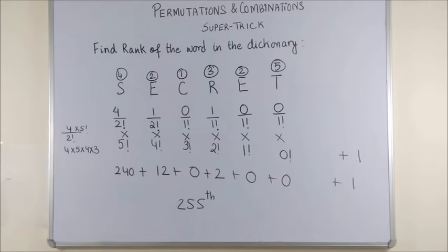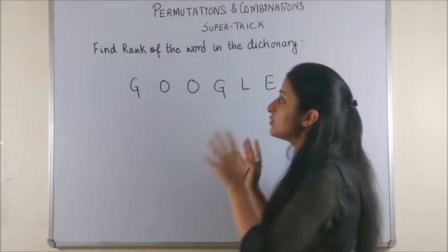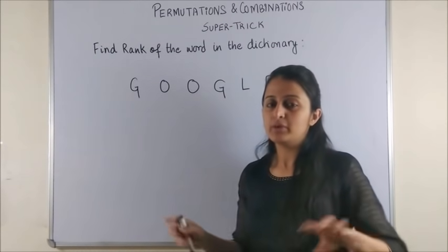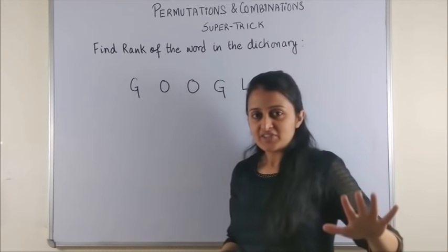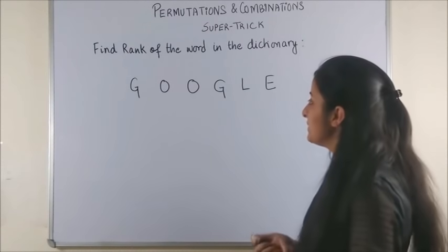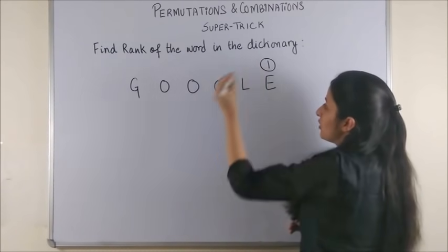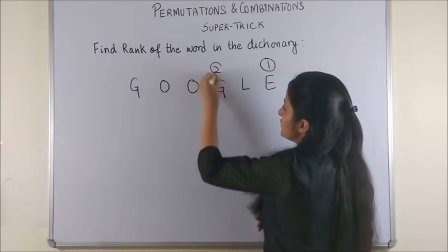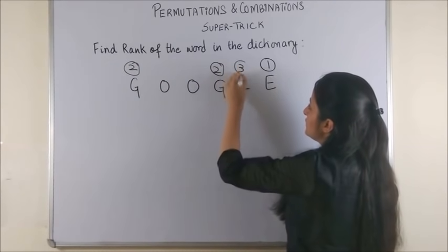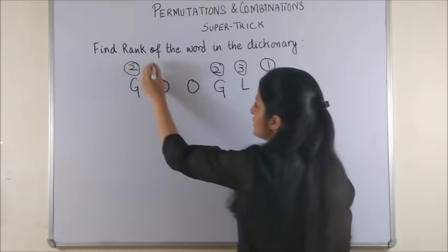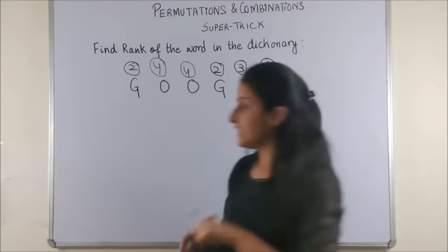Now, let's take up one more example. Let's explore what is the rank of the word GOOGLE in the dictionary when all the alphabets of the GOOGLE are arranged with or without meaning in the dictionary. Once again, you rank the words. E comes on the top. Then you have G which is occurring twice. Next, we have L which is occurring on the third position. And both the O's would take the fourth position.